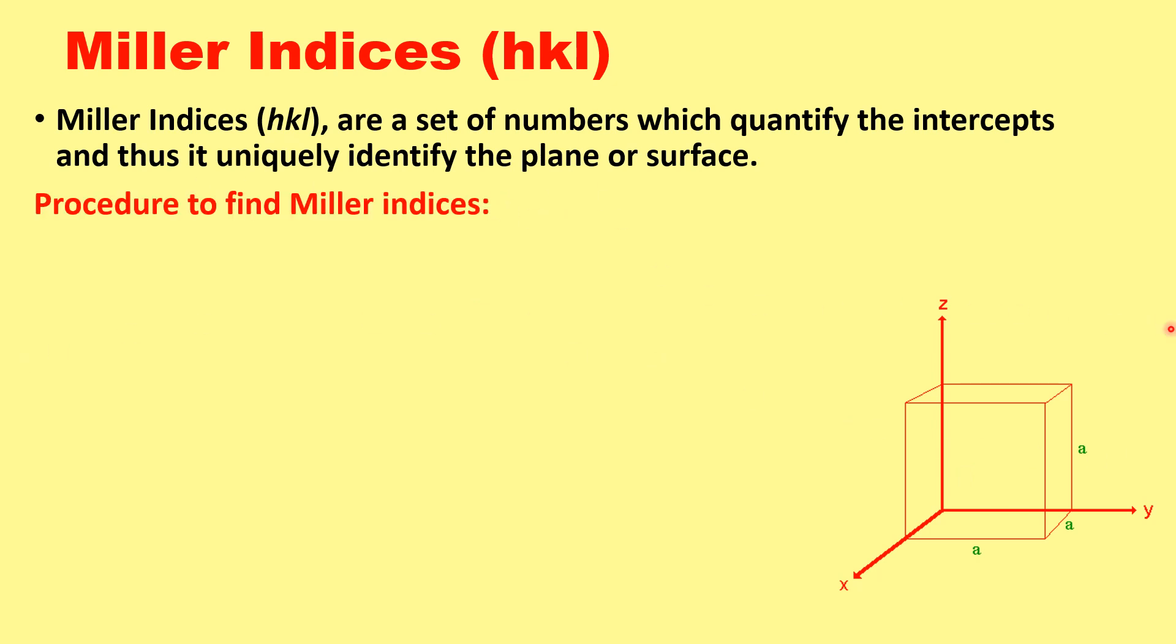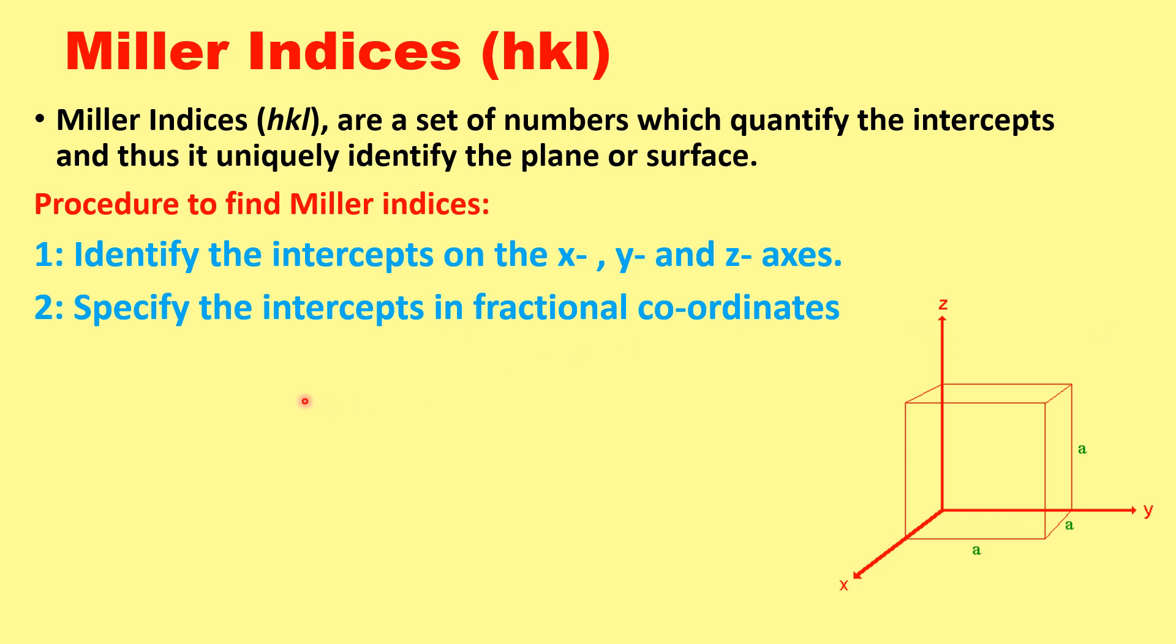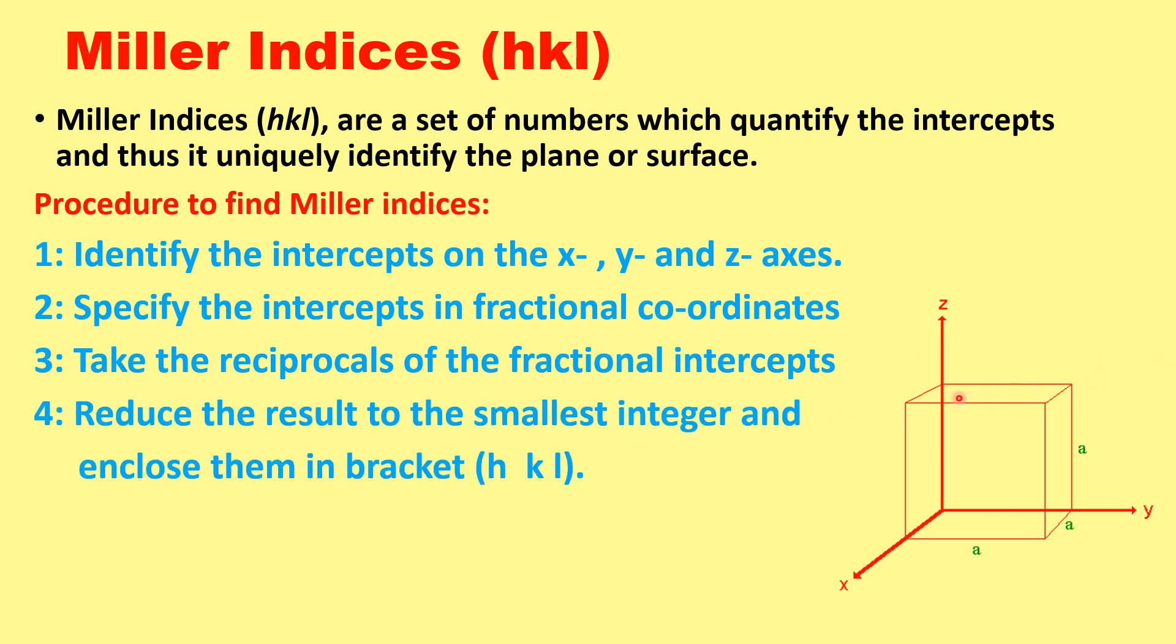The procedure is: first, identify the intercepts on x, y, and z axes. Specify these in fractional coordinates, then take the reciprocal of fractional intercepts. Then reduce the result to the smallest integer and enclose them in a bracket, writing h, k, l.